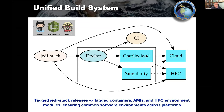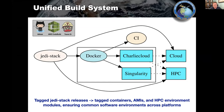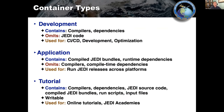Our build system starts with the JEDI stack build scripts. We use JEDI stack to make environment modules directly on cloud and HPC systems, but we also use those same build scripts to make Docker images. The Docker containers we use directly for continuous integration testing, and from the Docker images we create Charliecloud and Singularity containers as well. These containers can be tagged with versions so you know exactly what's in them.